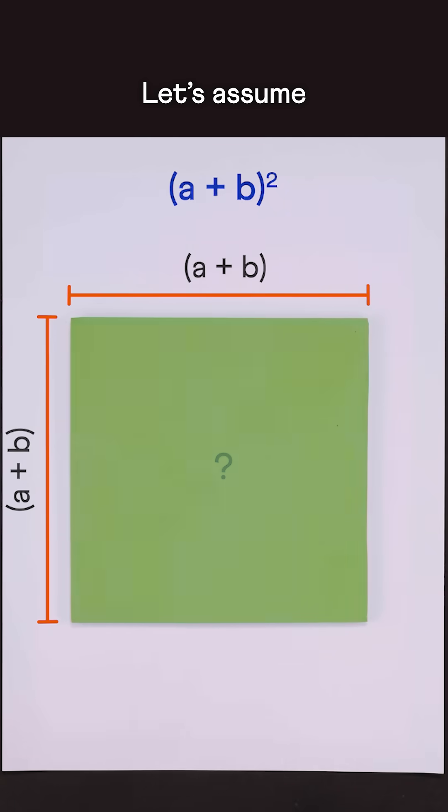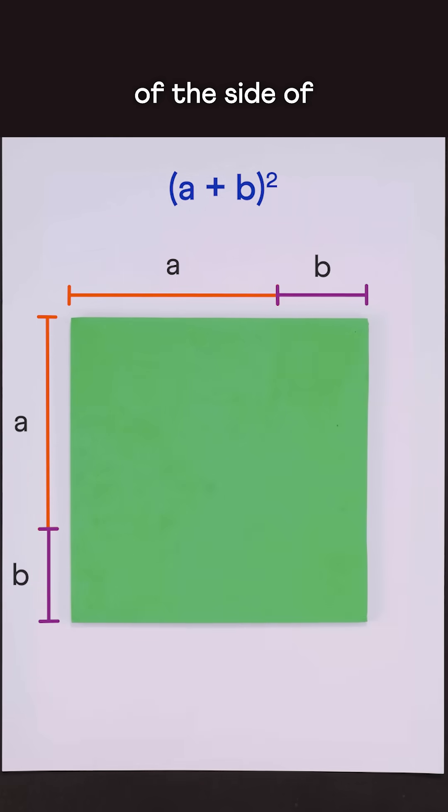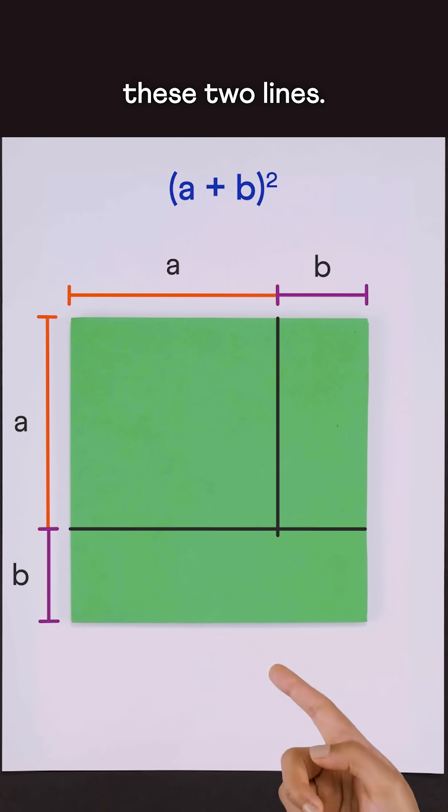What is its area? Let's assume A to be some length and B to be the remaining length of the side of this square. Now let's draw these two lines.